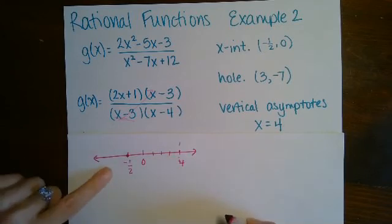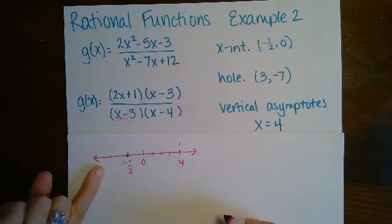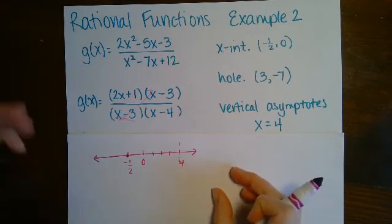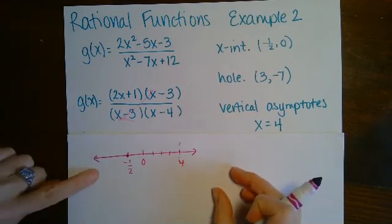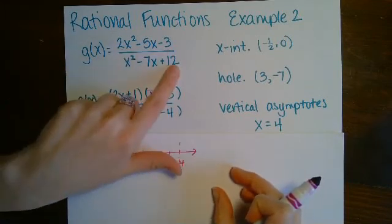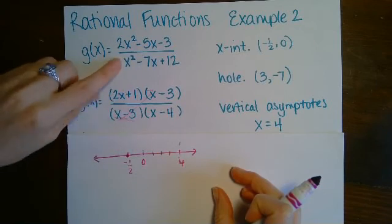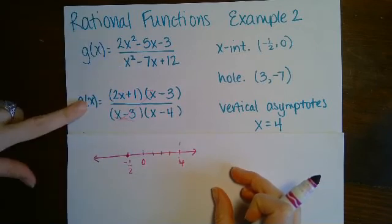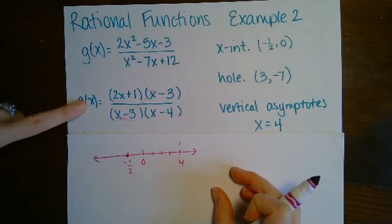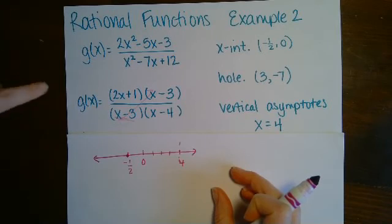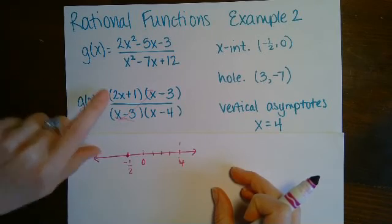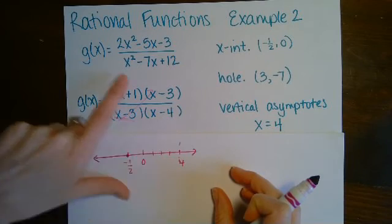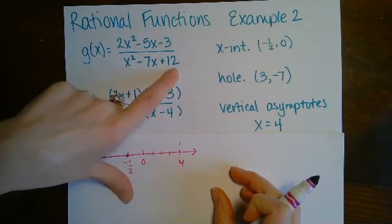We look for a point to the left of negative one-half — let's say negative five. We could plug that into the original expression, but that wouldn't be wrong — it would just be more complicated. The easier approach is to plug it into the factored form. It's a lot easier to see and to compute; for example, negative five minus four is much easier to do mentally than working with the original expression.